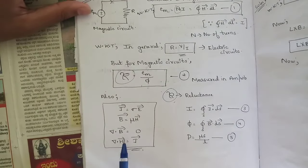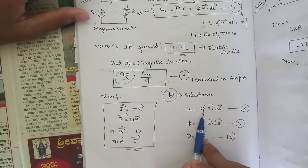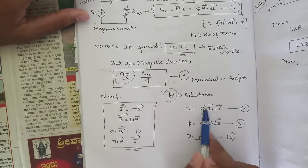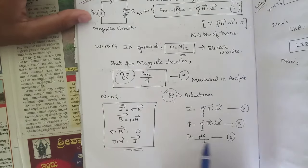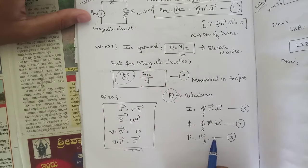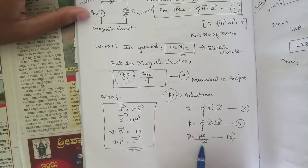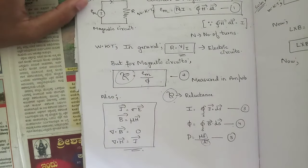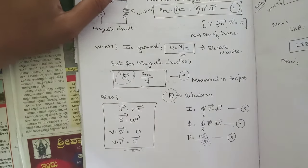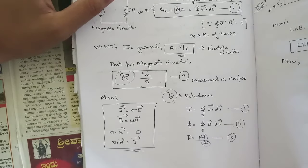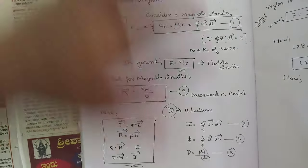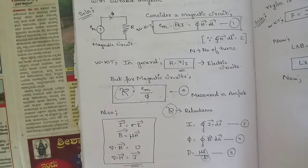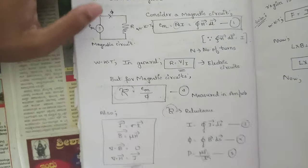Del dot H equals zero, I equals the surface integral of J dot dS where J is the current density, phi equals the surface integral of B dot dS, and T equals mu times S by L, where L is the length and S is the surface area of the magnetic region bounded by the magnetic circuit. This was the answer for magnetic circuits.